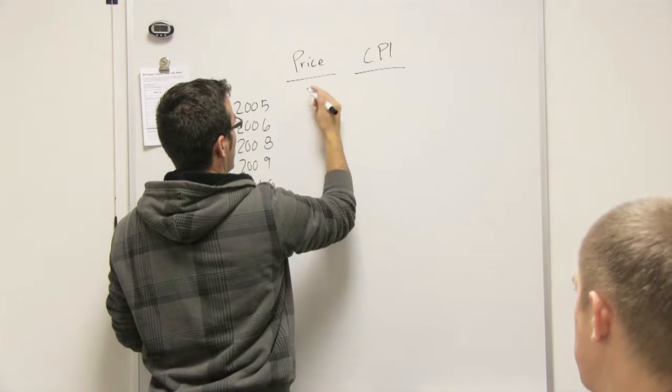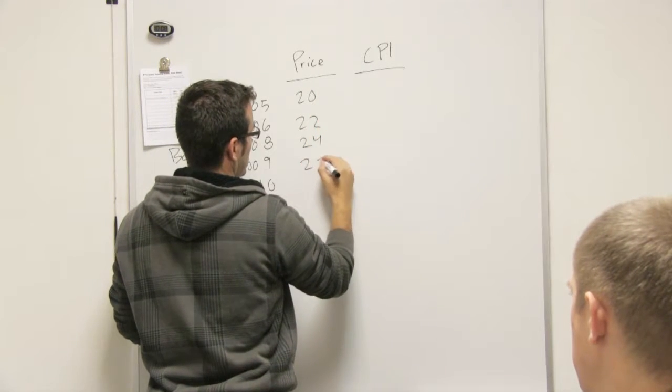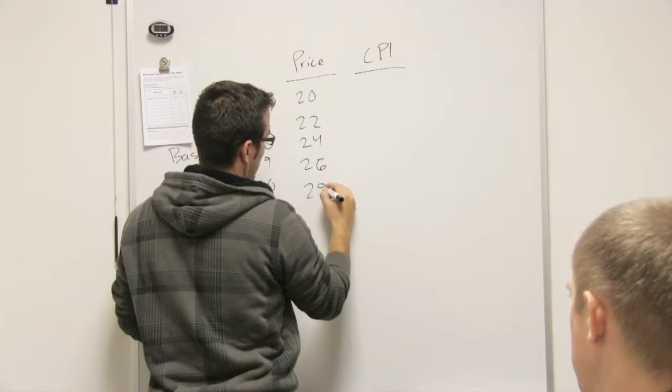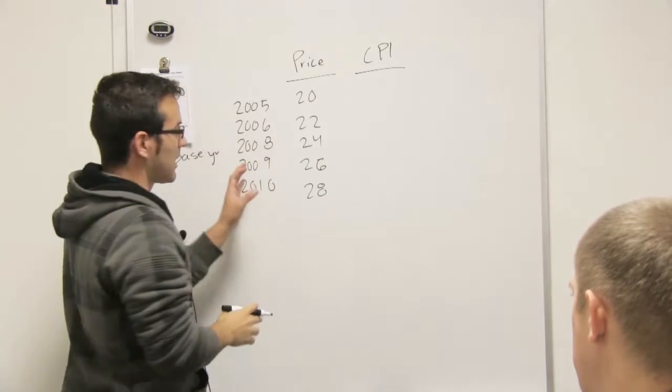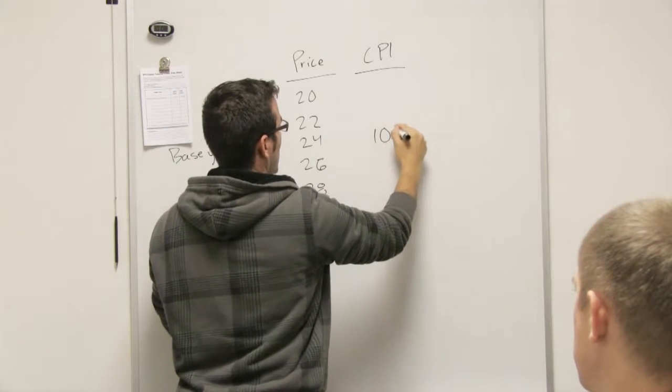Obviously the price is going to be going up, right? So maybe that basket cost 20 dollars, then 22 and 24 and then 26 and then 28. The price is going up but it's the same goods, right? And so your base year - your CPI is always going to be 100 for your base year.